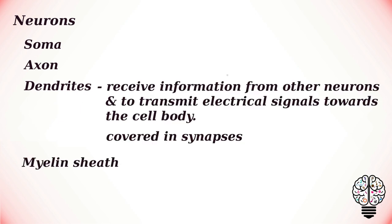The myelin sheath is an insulating layer that forms around the axon and allows nerve impulses to transmit more rapidly along the axon. As neurons do not touch each other, there is a gap called the synapse between the axon of one neuron and the dendrite of the next.